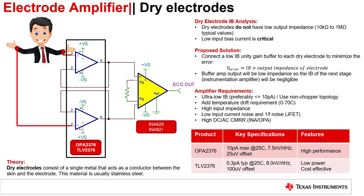Dry electrodes consist of a single metal, usually stainless steel, that acts as a conductor between the skin and the electrode. Dry electrodes do have high output impedance, so an amplifier with low input bias current is crucial for maximum accuracy. The proposed solution is to connect a low IB unity gain buffer to each dry electrode to minimize the error. Voltage error due to input bias current equals the input bias current of the amplifier multiplied by the output impedance of the source — in this case, the dry electrode. The buffer isolates these impedances from the load and the source. The buffer output is low impedance, so the input bias current error of the next stage, the instrumentation amplifier, will be negligible.